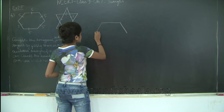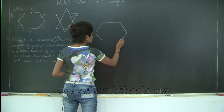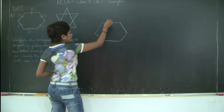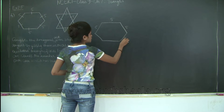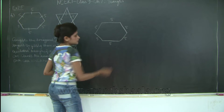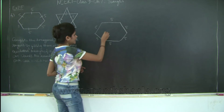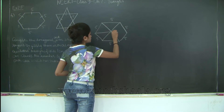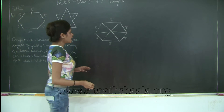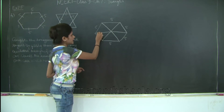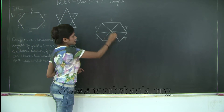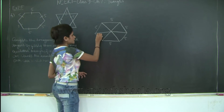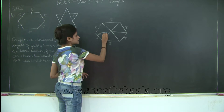It's a regular hexagon — regular hexagon meaning all the sides are equal. So each side is 5 centimeters, I will take 5 units. Now if I connect these points, how many equilateral triangles am I getting? You will get — this triangle, this triangle, this triangle, this triangle, this triangle, this triangle — each of them is an equilateral triangle.